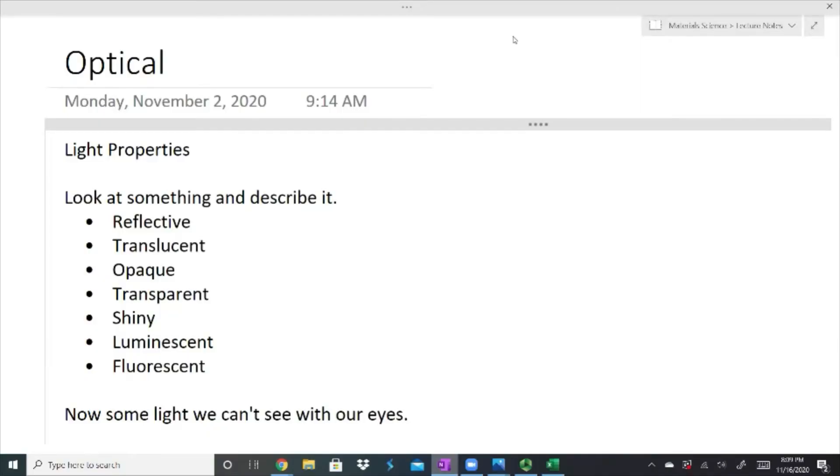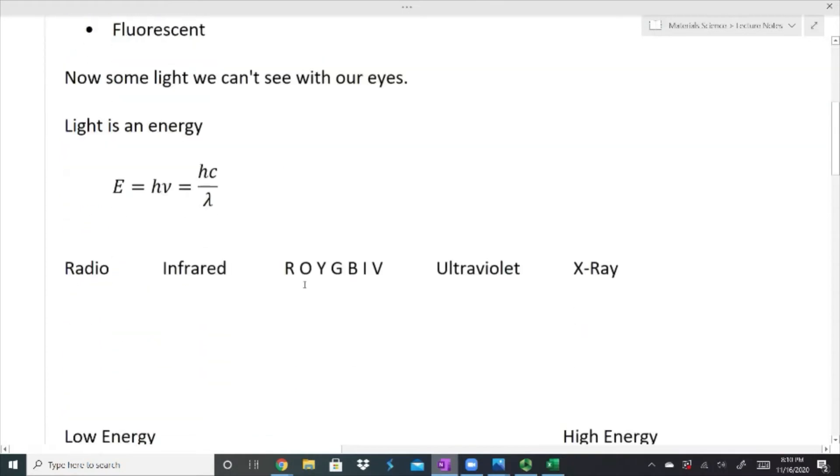This optical properties video is going to be pretty short. We're just going to skim the surface and talk about some of them without getting into a lot of theory. Optical properties would also be what some would consider light properties, such as if you look at something and describe it—it's reflective, translucent, opaque, transparent, shiny, luminescent, or fluorescent. Those types of things are optical properties, things that you can see. There's some light we can't see with our eyes. Those are still optical properties; we just have to see them with other instrumentation or they exist whether we can see them or not.